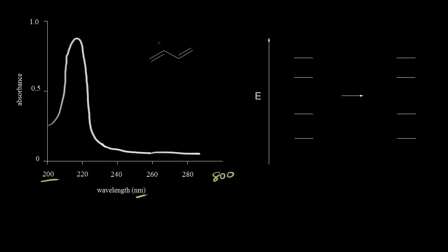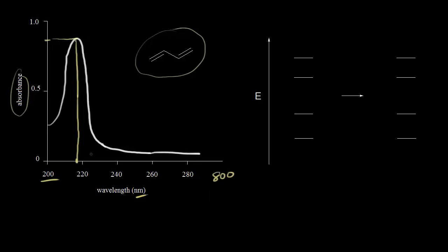Here is an absorption spectrum for 1,3-butadiene. We can see that this molecule absorbs most strongly at just under 220 nanometers — it turns out to be 217 nanometers. We call this lambda max. So the wavelength of light absorbed by this molecule is about 217 nanometers; it absorbs in the UV region. Therefore, butadiene does not have any color — it's colorless.